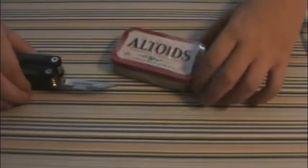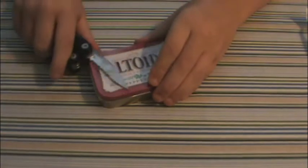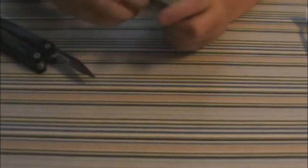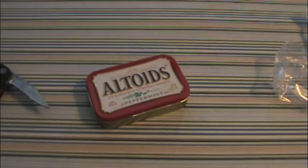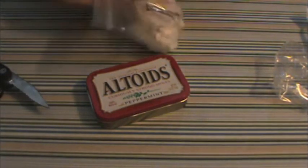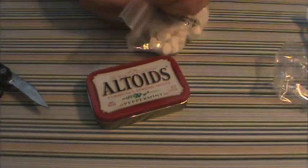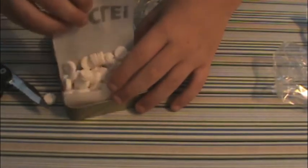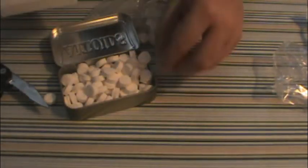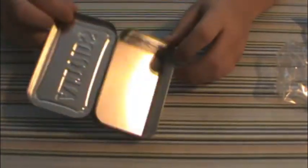Okay, the first thing you're gonna want to do is open the Altoids tin. Then get a plastic bag to put it in. I've already done this, so I have another plastic bag. I lost a couple. Then you put it in the plastic bag. So once you got your tin, you took all the little mints out.